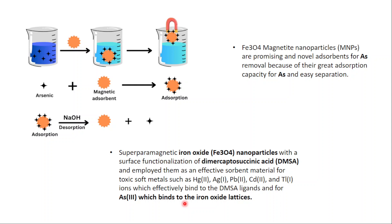Superparamagnetic iron oxide Fe₃O₄ functionalized with DMSA can complex with arsenic, mercury, silver, lead, and cadmium — all heavy metals that contaminate groundwater. Due to the magnetic properties of Fe₃O₄, a magnetic field separates out the nanoparticle leaving behind clear groundwater. Statement one is true. Statement two discusses pump-and-treat strategy — a common method for cleaning up groundwater contaminated with dissolved chemicals including industrial solvents, metals, and fuel oil.